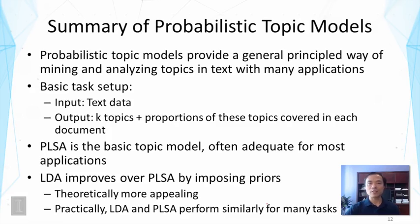To summarize our discussion of probabilistic topic models: these models provide a general principled way of mining and analyzing topics in text with many applications. The basic task is to take text data as input and output key topics — each characterized by a word distribution — along with the proportions of these topics covered in each document. PLSA is the most basic topic model and is often adequate for most applications. LDA improves over PLSA by imposing priors, leading to theoretically more appealing models, but in practice LDA and PLSA tend to give similar performance.